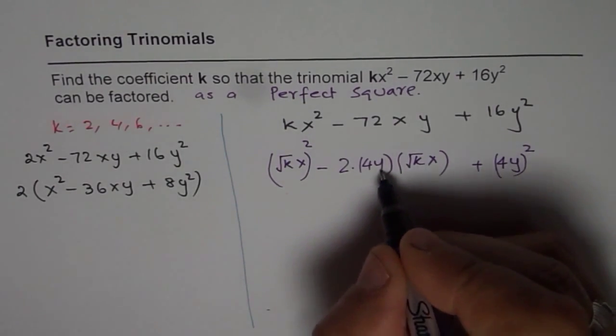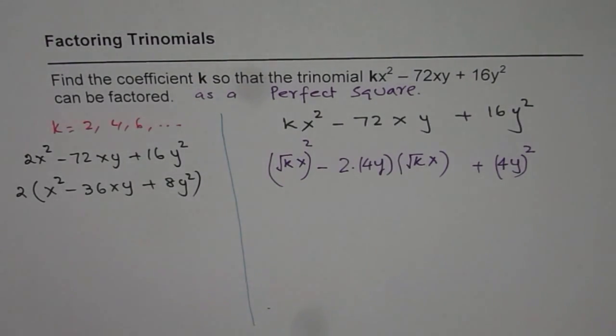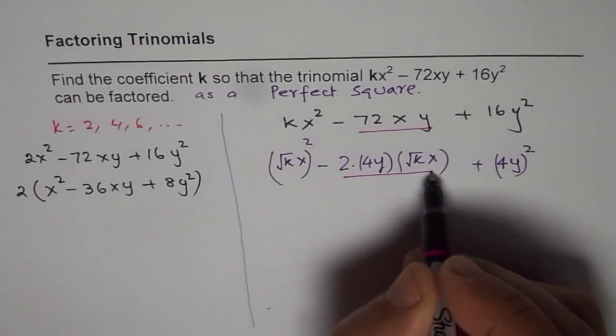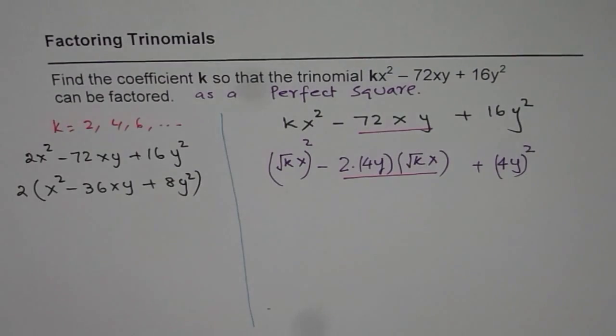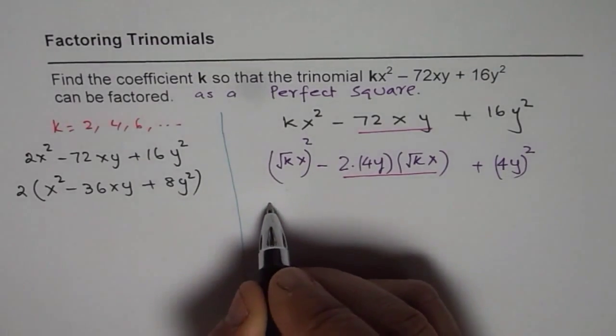Now, this is 4y. So that really means that we can now equate 72xy with this number and find the value of k. So you have an equation to work with. So we have 2 times, let me write them as such itself,